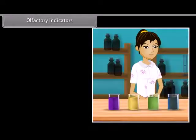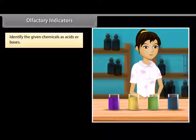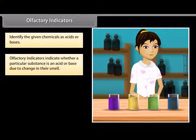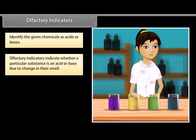Suppose you are given four chemicals and asked to identify them as acids or bases — how will you do it? We have olfactory indicators, which indicate whether a particular substance is an acid or base due to a change in their smell. They are used in the laboratory to test whether a solution is a base or an acid by a process called olfactory titration.